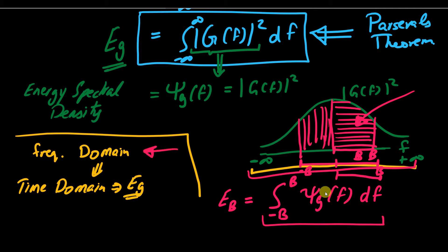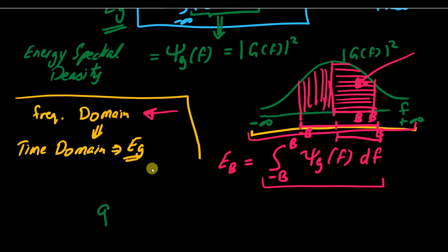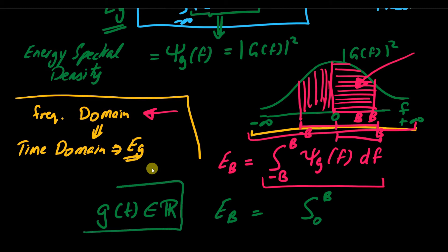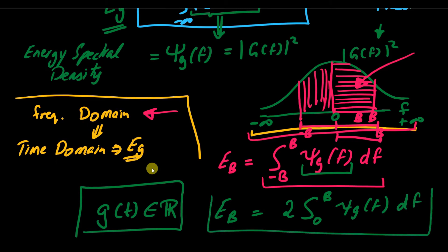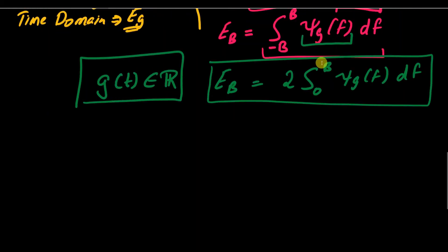This bandlimited energy calculation is only achievable in the frequency domain — it was not possible in the time domain. As a special case, if G(t) is a real signal, the essential bandwidth integral runs from 0 to B, but since the energy spectral density is an even function for real signals, we multiply by 2 and integrate Φ_G(f) df from 0 to B.